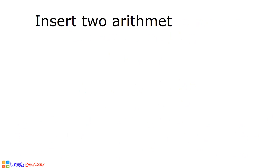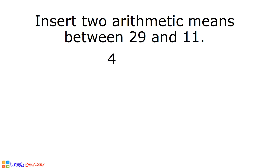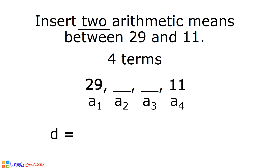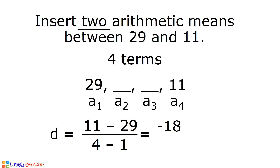Another example: insert two arithmetic means between 29 and 11. There are four terms in this arithmetic sequence because we are asked to insert two arithmetic means between two numbers. The first term is 29, we have two missing terms, and 11 is our fourth term. The common difference is equal to 11 minus 29 divided by 4 minus 1. 11 minus 29 is equal to negative 18. 4 minus 1 is equal to 3. Negative 18 divided by 3 is equal to negative 6. That is our common difference.